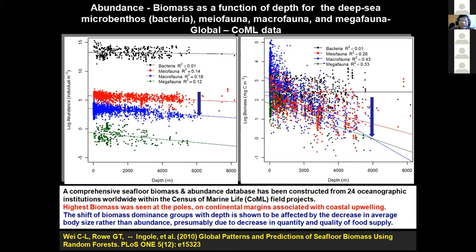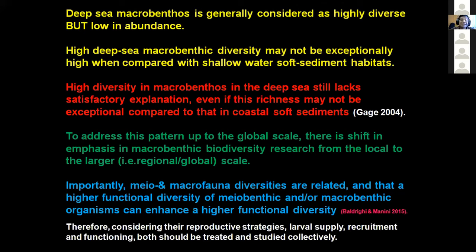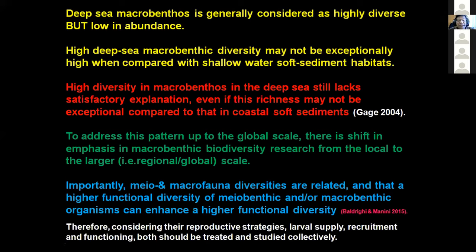In the global picture, deep sea microbenthos is generally considered to be highly diverse but low in abundance. Macrobenthos may not be extremely high compared to shallow water but it is certainly present in the abyssal plain. As far as megafaunal diversity is concerned, it appears to be high in the ridge region or seamount region because they are specific to those habitats compared to other areas, and this could be because of resource availability.